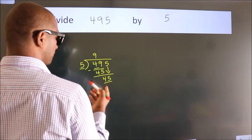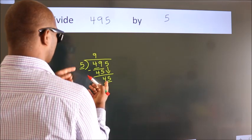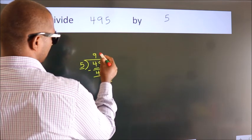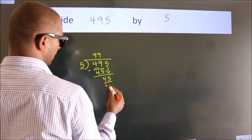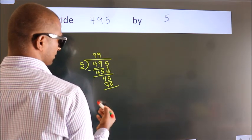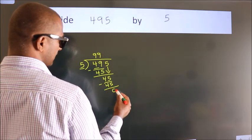So 45. When do we get 45? In 5 table, 5 nines, 45. Now we subtract. We get 0.